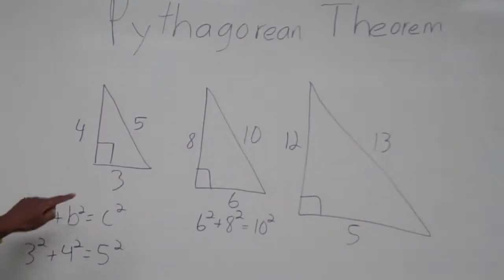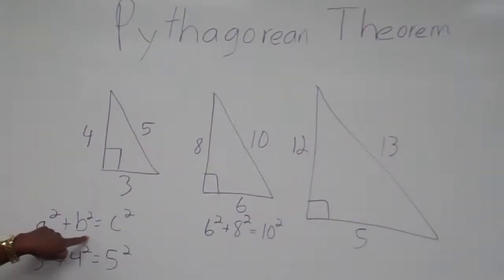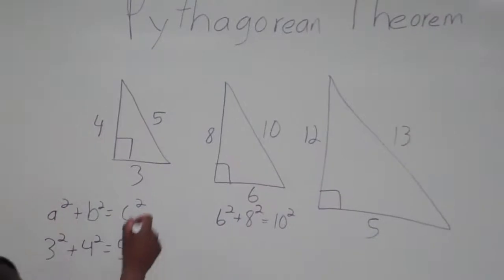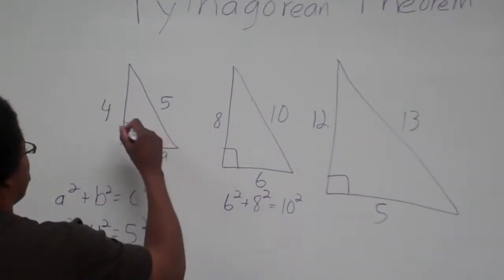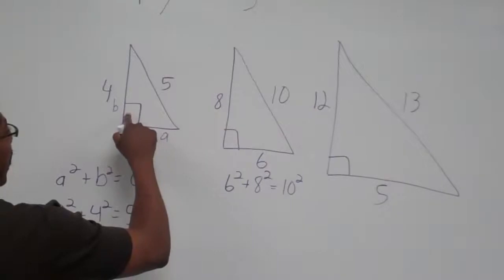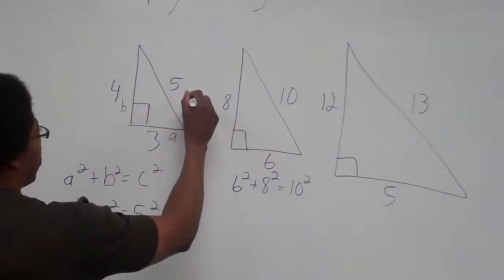The formula would be A squared plus B squared equals C squared. Now, the smallest side would be A, the second smallest side would be B, and the hypotenuse, or the side opposite the right angle, would be C.